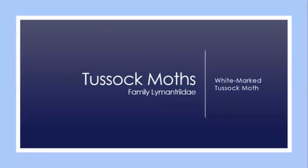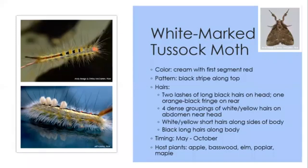Our next group is tussock moths — many of which are very hairy and can be irritating to skin. We'll look at the white-marked tussock moth caterpillar. People describe it as looking like a piece of sushi. It has a cream body, a red head, a black stripe on top, and so many different hair arrangements: two lashes of black hairs on the head, one lash of orange hair near the rear, four dense groupings of white to yellow hairs on the abdomen near the thorax, tufts of white and yellow hairs along the body, and sparse long black hairs along the body. May through October, you can find it on elm, maple, and basswood trees.